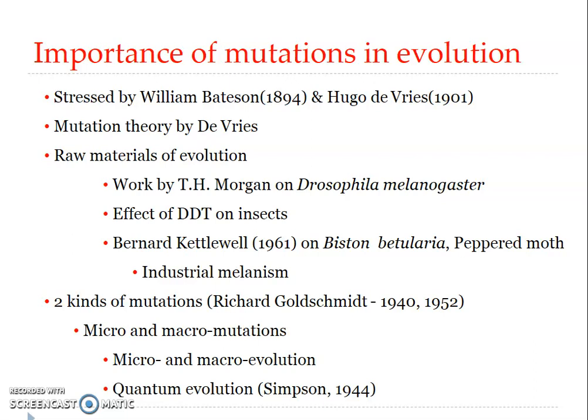Whether the mutation is produced by changes in the molecular structure and arrangement of genes, or by changes in the number of chromosomes, the ultimate source is mutation. Its importance in evolution was first stressed by William Bateson in England in 1894 and Hugo De Vries in Holland in 1901.